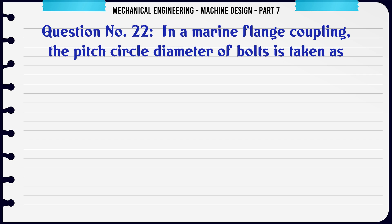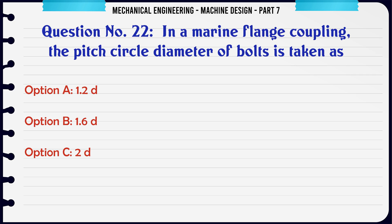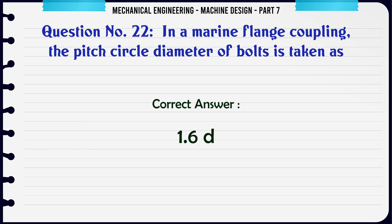In a marine flange coupling, the pitch circle diameter of bolts is taken as: a) 1.2d, b) 1.6d, c) 2d, d) 2.5d. The correct answer is: 1.6d.